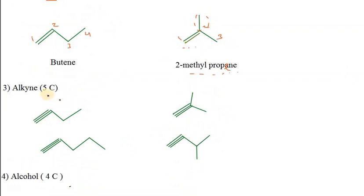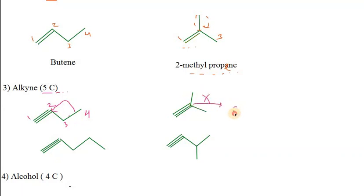For alkyne, it needs minimum 5 carbons to form chain isomerism. If we try 4 carbons — 1, 2, 3, 4 — and put a methyl group over here, this is not possible because the valency of carbon becomes 5, which is not possible. So if we talk about how many minimum carbons are needed for an alkyne to show chain isomerism, it is 1, 2, 3, 4, 5 — minimum 5 carbons are needed.